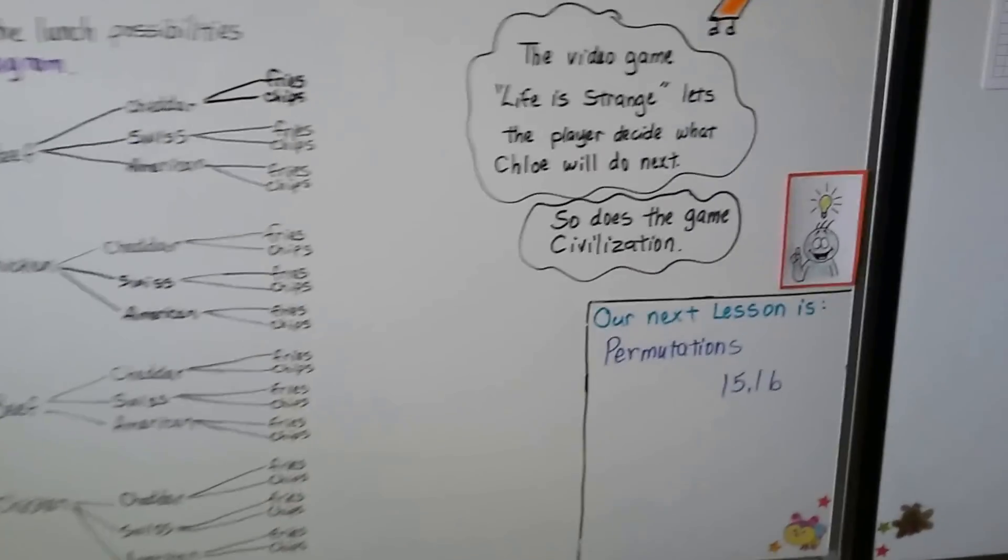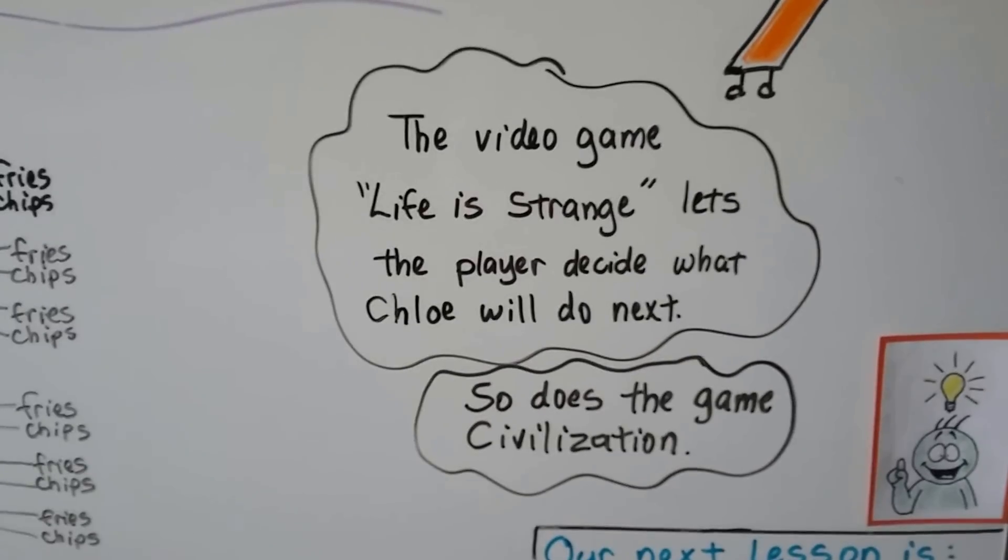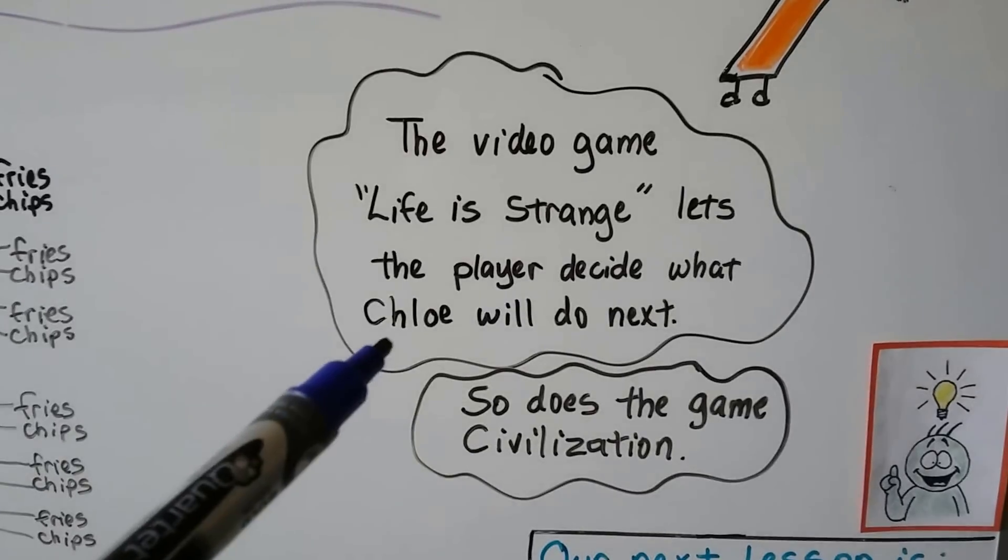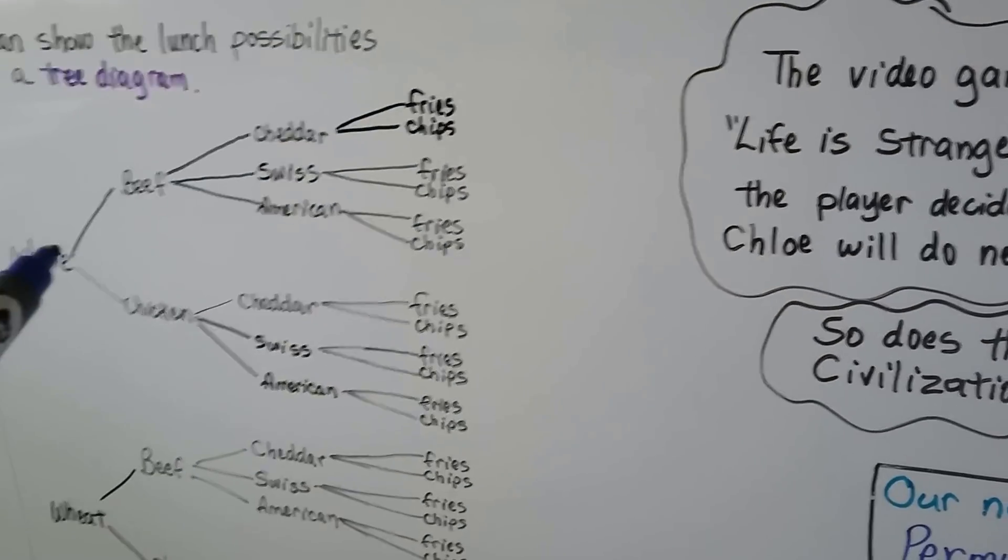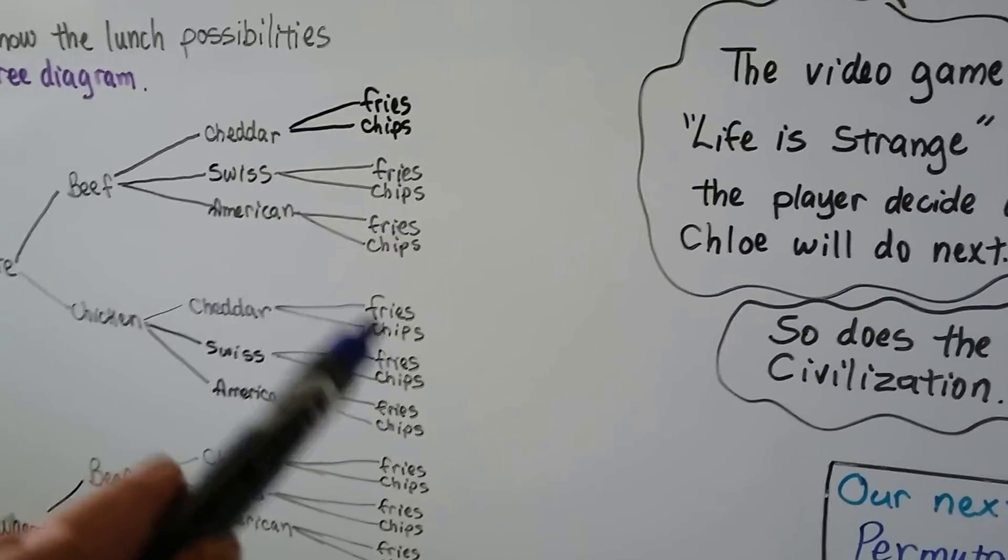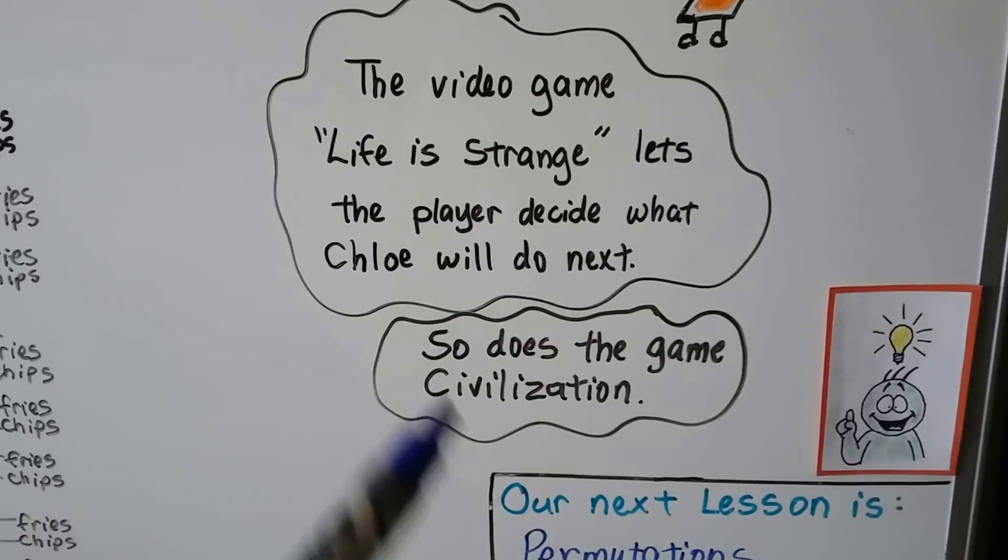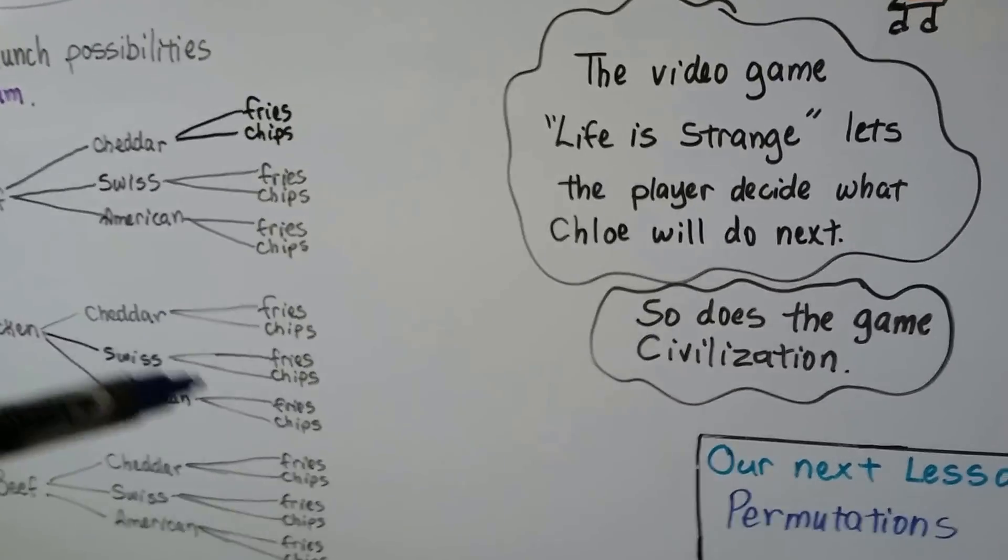Now I don't know if any of you have ever played the game, the video game Life is Strange. It lets the player decide what Chloe will do next. That's the main character of the game. So depending on what she does is going to change what happens in the game for her decision. Or really for your decision. And if you've ever played the game Civilization, depending on what you do, it'll send you down a different path.